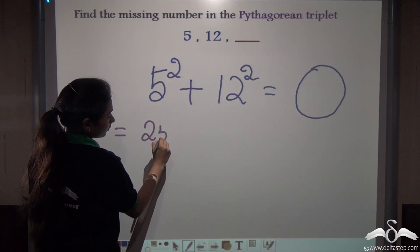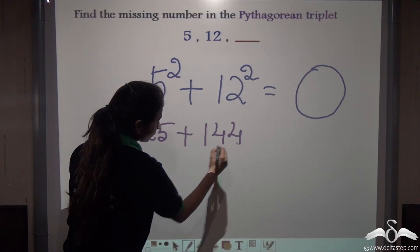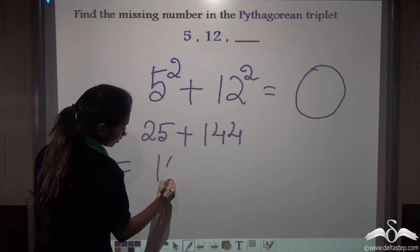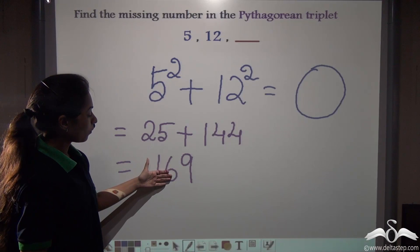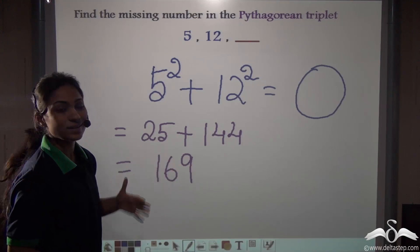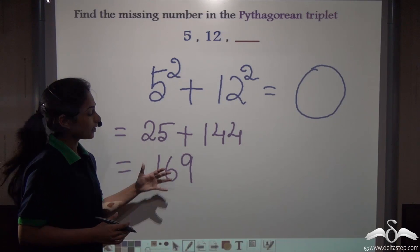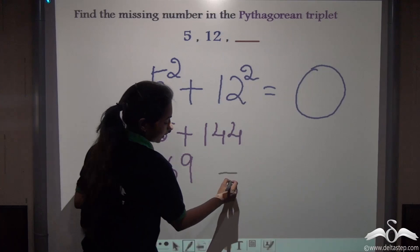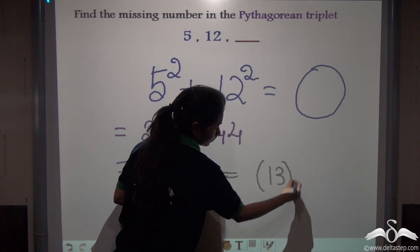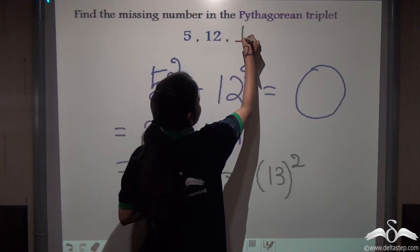5 squared is 25 and 12 squared is 144. What do I get? Now tell me, what is the square root of 169, or if I ask you which number when squared gives us 169? That is 13. So what will be the missing number here? 13.